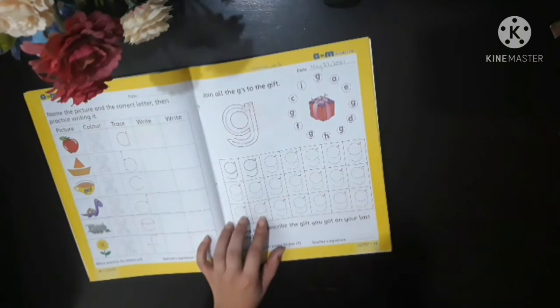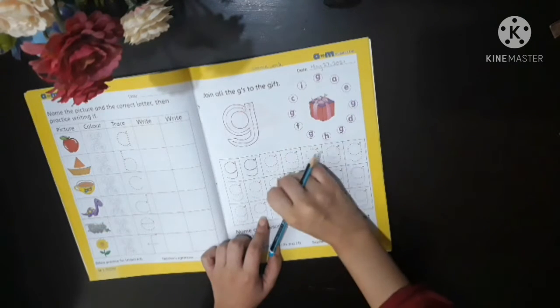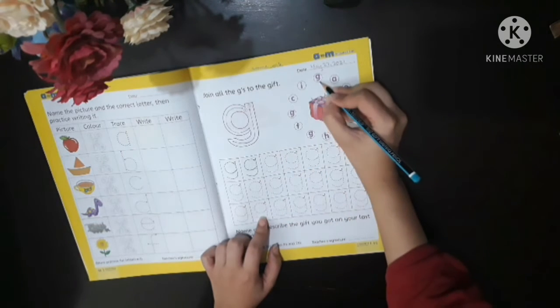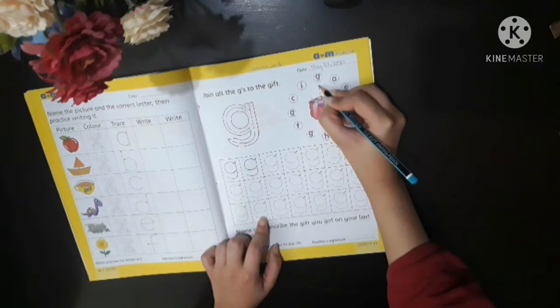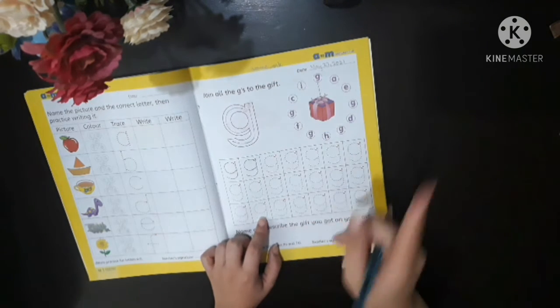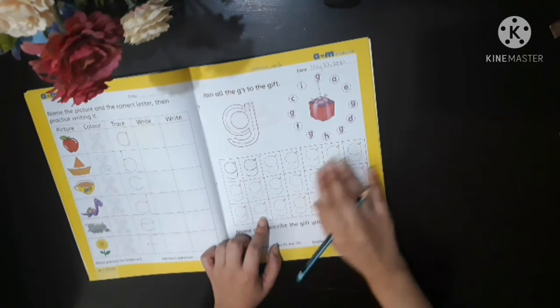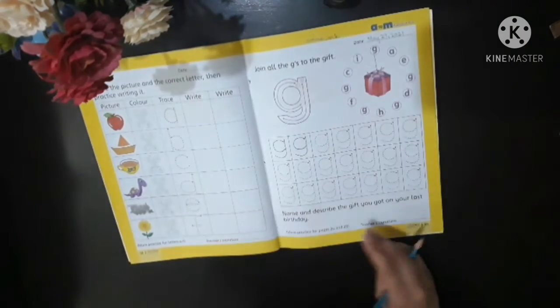I will just do one for you. You have to find the letter G in here. So I found one here, G, and I'll join the gift to this one. Now you're gonna find more. Just find the letter G and join it with that. And that shall be it.